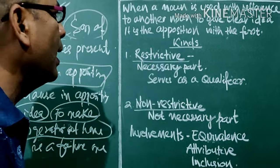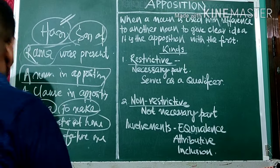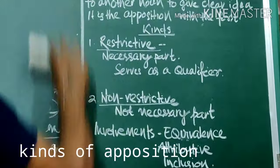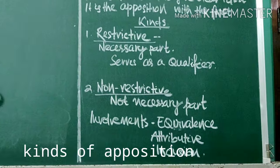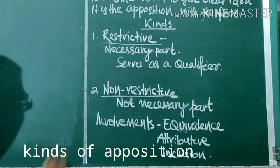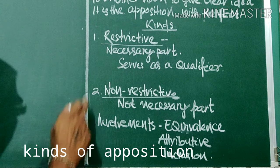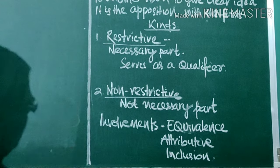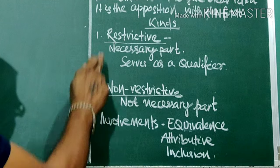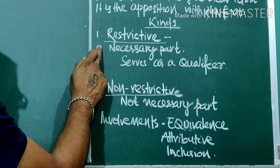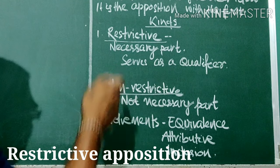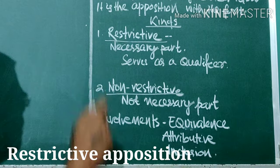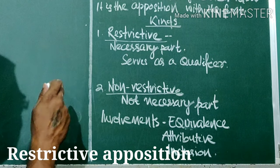Now we will discuss about the kinds of Apposition. There are two kinds: one is restrictive and the other is non-restrictive. Restrictive means a necessary part — the Apposition is very much necessary to the first noun.